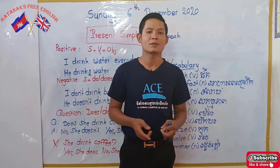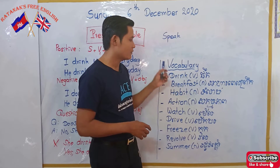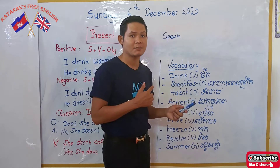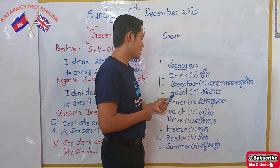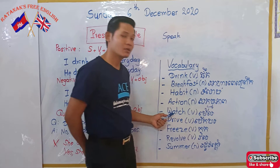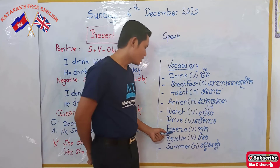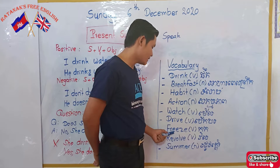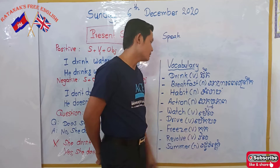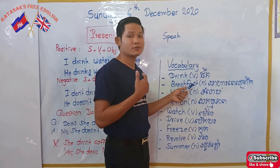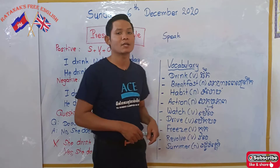Before we go, please don't forget to subscribe. Let's take a look at our vocabularies. Today we have: drink, breakfast, habit, action, watch, drive, freeze, revolve, summer. For example, 'drink' — when you drink water or beer. 'Summer' — when it is in the hot season.